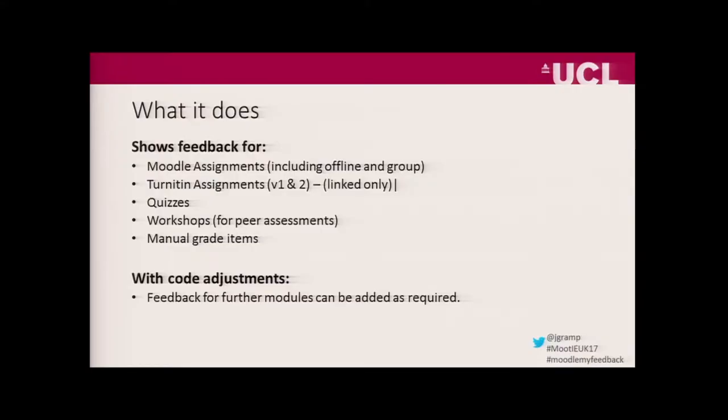The feedback report shows Moodle assignments, Turnitin assignments, quizzes, workshops, and any manual grade items entered directly into the grade book. With Turnitin assignments, we can only actually link to the assignment, which is still a big improvement on students having to dig around in their courses to find the links. But there's no API that we can use to draw in the feedback like we can with tools natively within Moodle. With code adjustments, it's not that difficult to add further modules in.